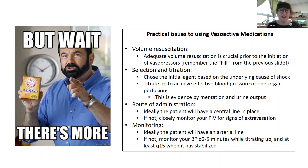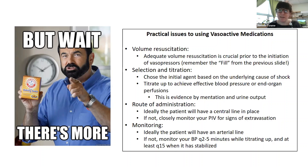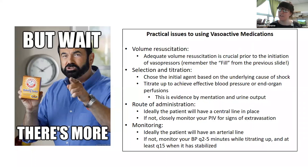For monitoring, ideally you'd have an arterial line, but if you don't, check blood pressure about every five minutes while up-titrating. Peripheral blood pressures can be hard to do very frequently and can skew numbers. Once you've stabilized and reached a good blood pressure, you can back off monitoring to about every 15 minutes.